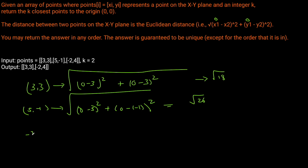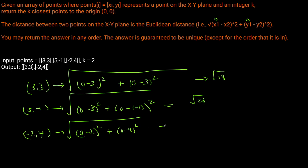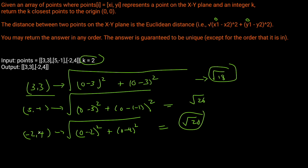Then we have the point (-2, 4), and plugging this into our formula we get (0 minus (-2)) squared plus (0 minus 4) squared, which gives us 4 plus 16, so root 20. Since k equals 2, the two smallest distances are root 18 and root 20, representing points (3, 3) and (-2, 4). That's why we return (3, 3) and (-2, 4).